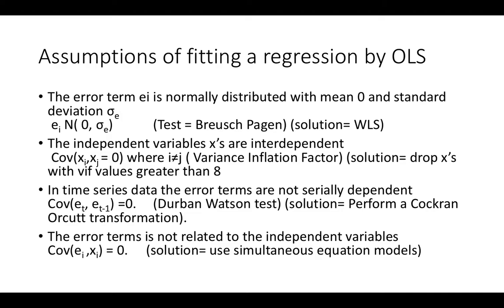Whenever a regression equation is fitted by ordinary least squares, there are four assumptions which underlie the estimate. The first is that the error term — the difference between actual and predicted — ei is normally distributed with mean zero and standard deviation sigma_e, written as e ~ N(0, sigma_e). This assumption is tested using the Breusch-Pagan test among others. If the data is not normal or has non-constant variance, the problem is called heteroscedasticity, and the solution is weighted least squares.